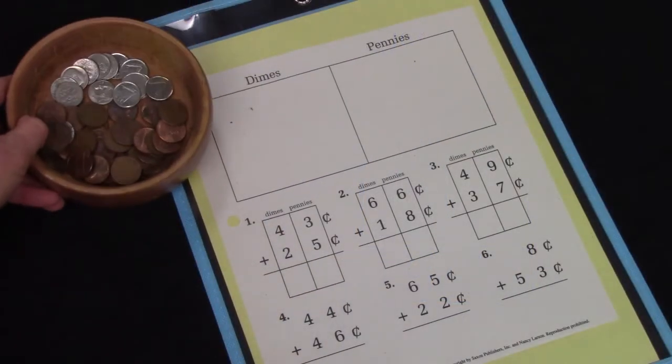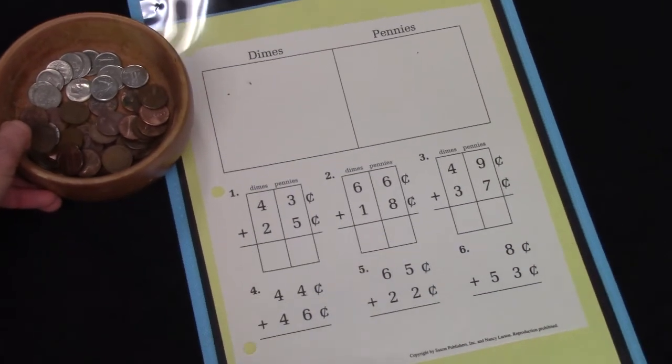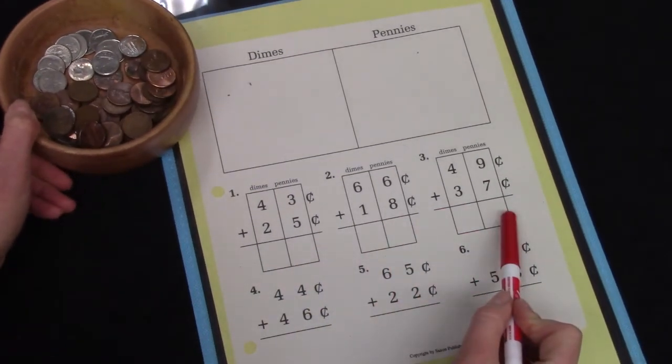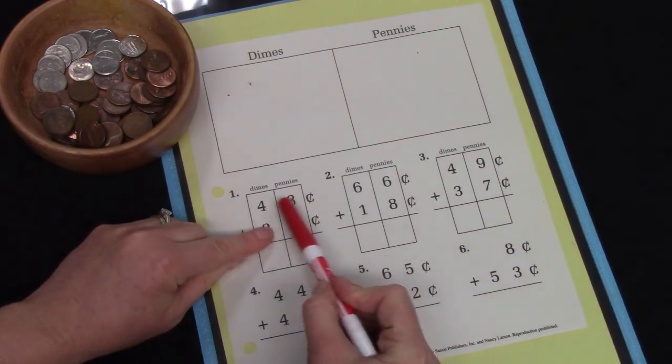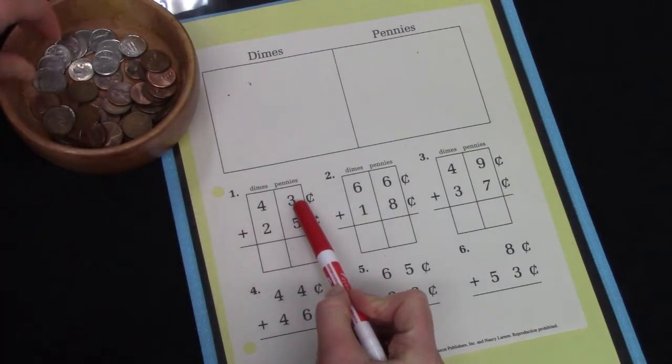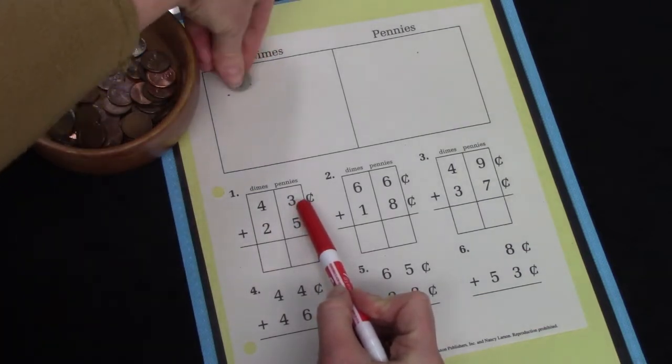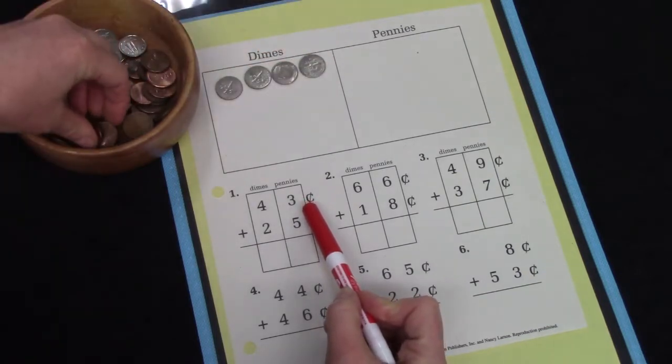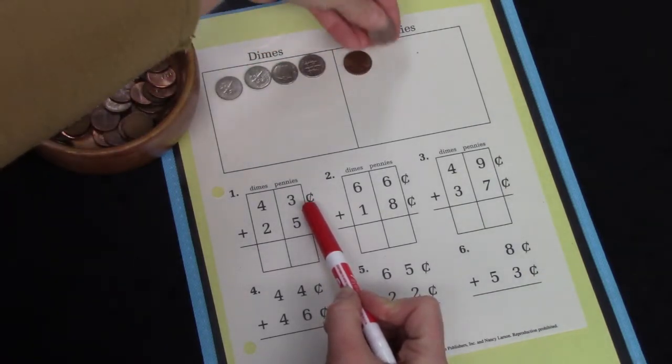Today we're going to be using some dimes and some pennies to do some double digit addition problems. On this first question it asks us to have 43 cents in dimes and pennies. So if I have 10, 20, 30, 40, 41, 42, 43.